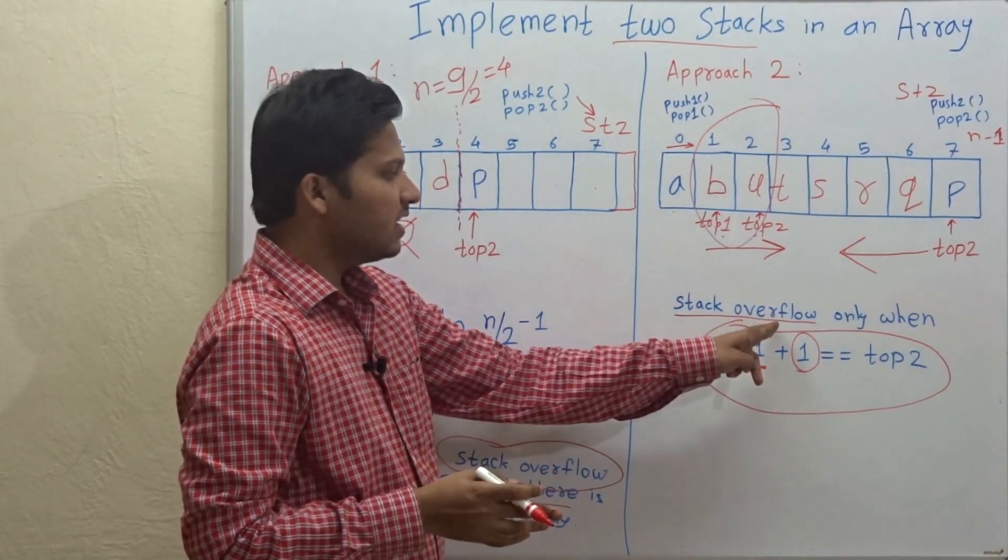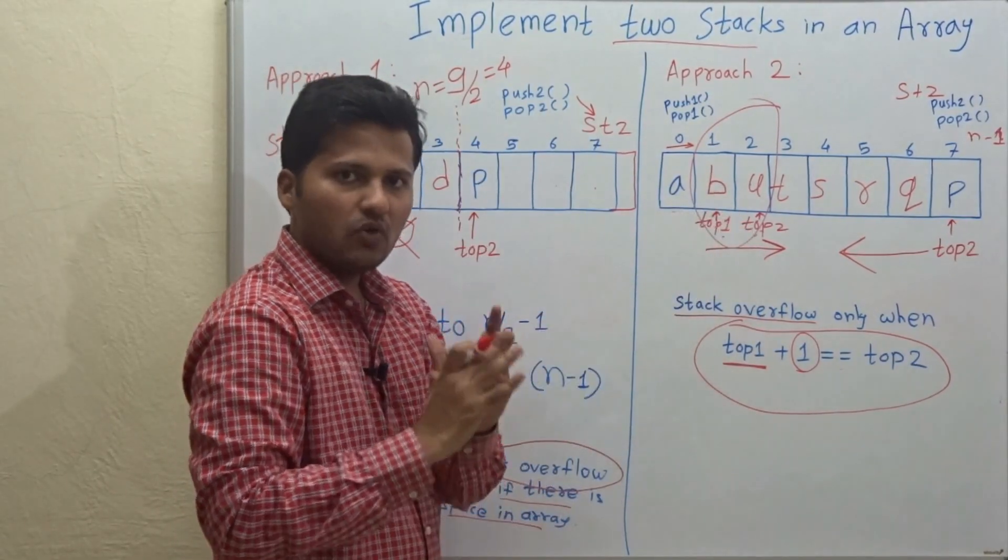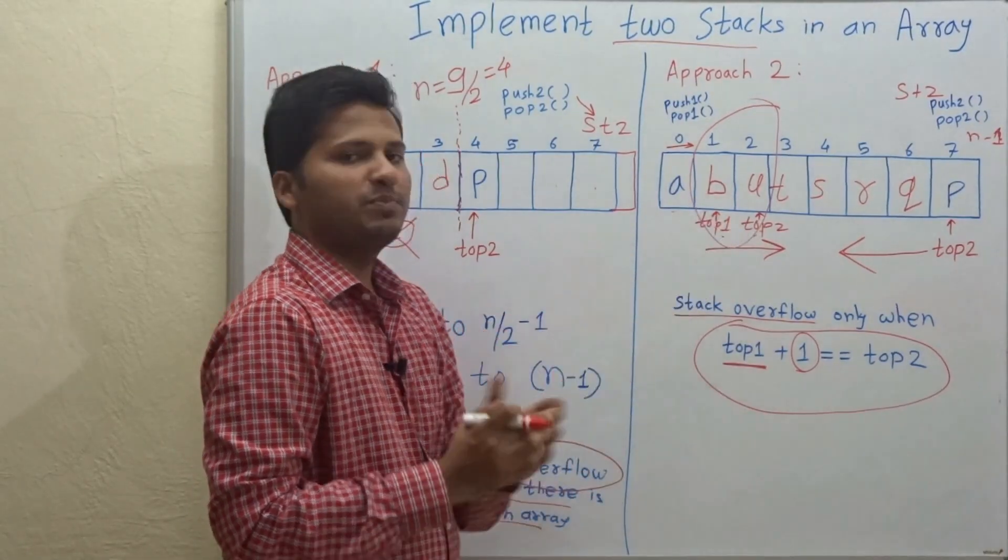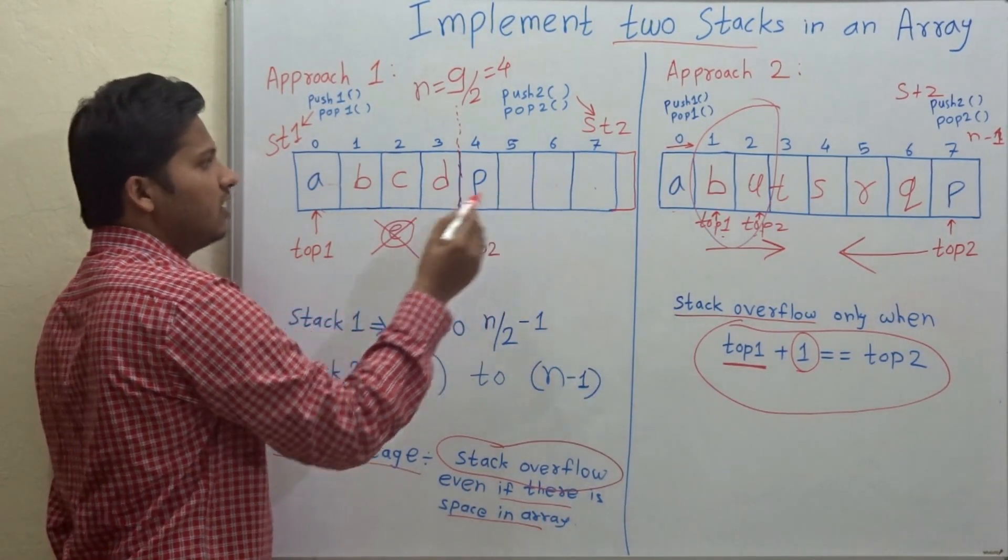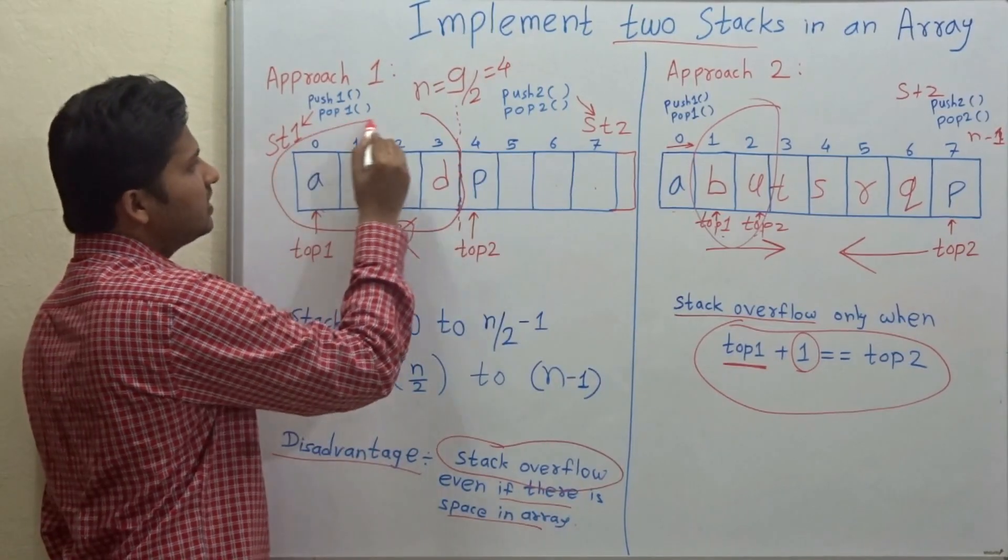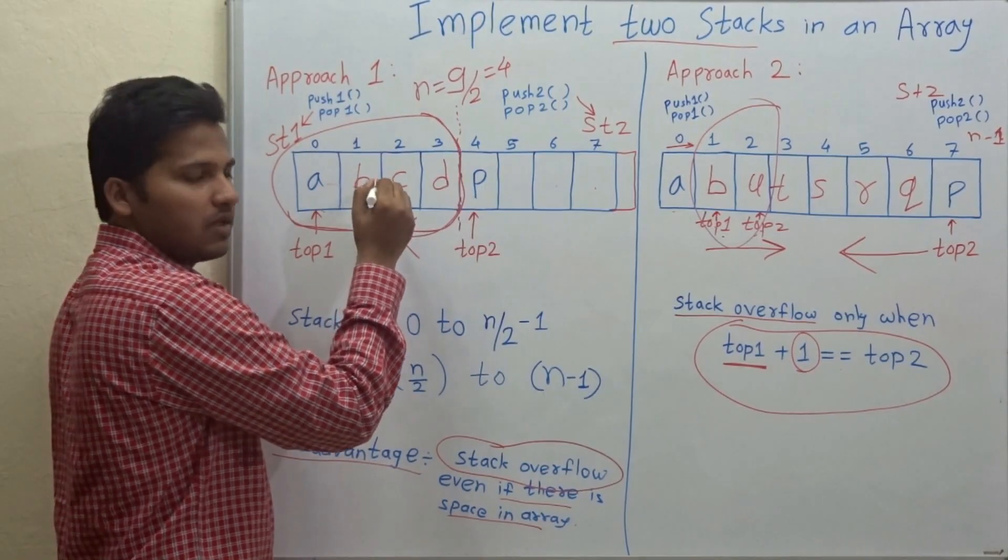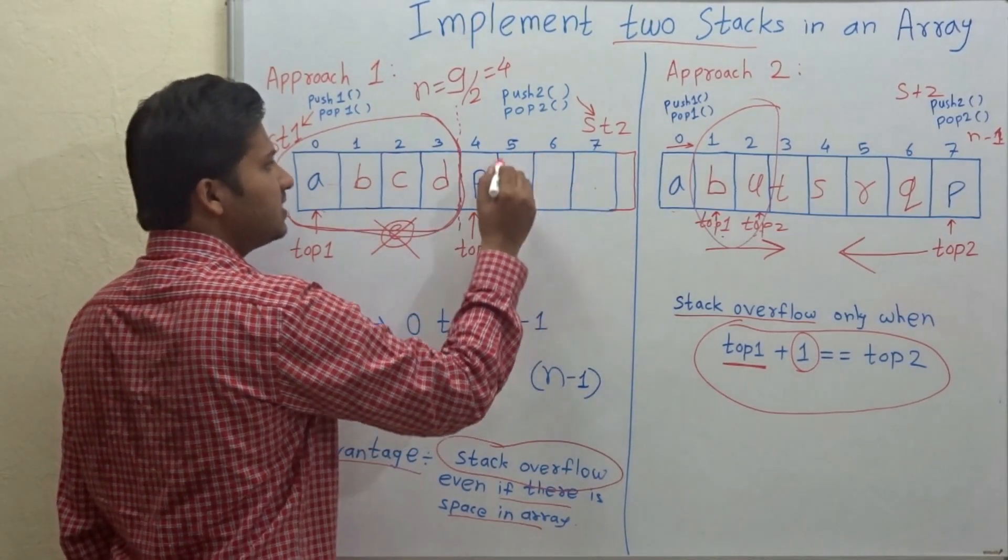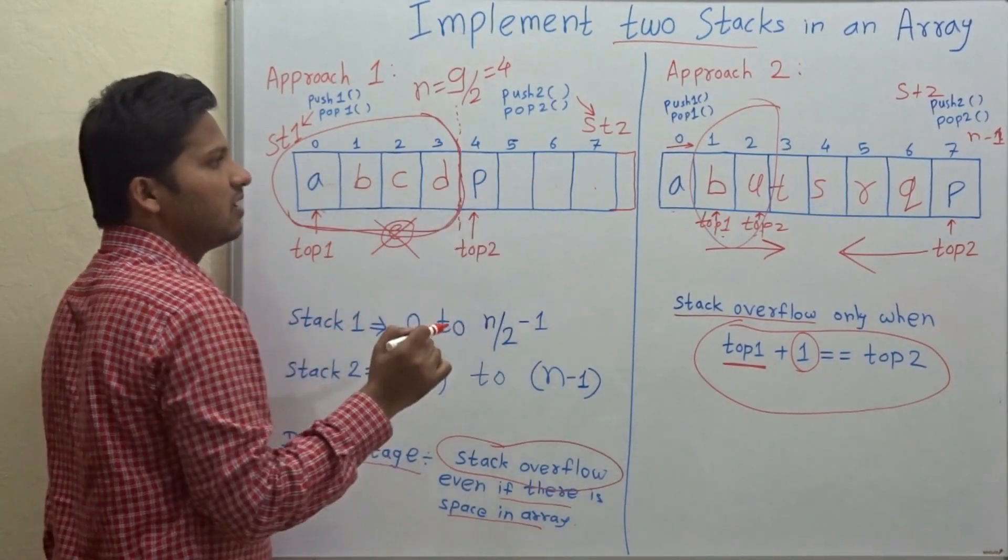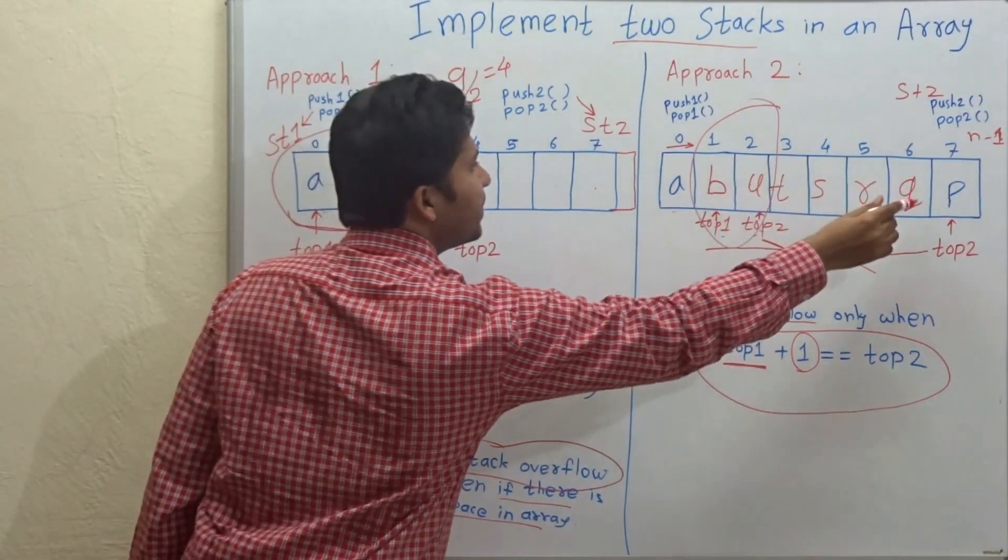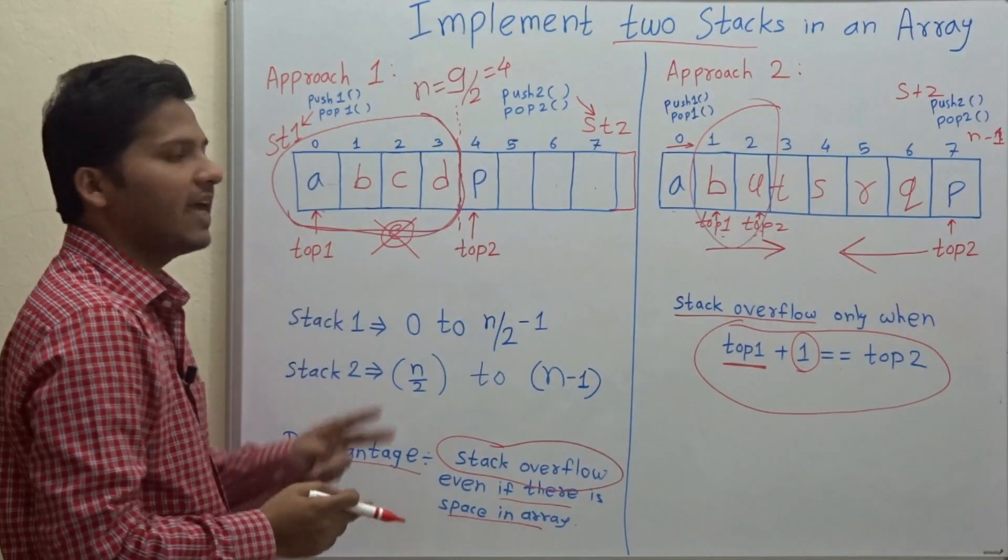But, you can see here, when the stack is overflow, we are saying the stack is overflow, then it is actually overflow. There is no wastage of space. But, in this case, even if there was space in this array, we had to say overflow when only this much array is over for stack 1. So, we have space in this array, but we cannot use that space for stack 1 which needs that space. But, in this array, there is no wastage of space. So, this is how we implement 2 stacks in 1 array.